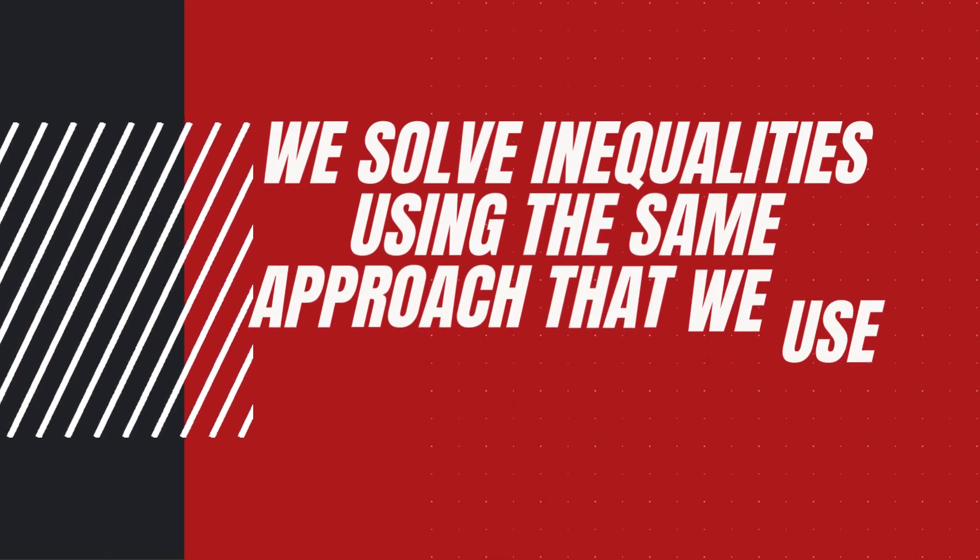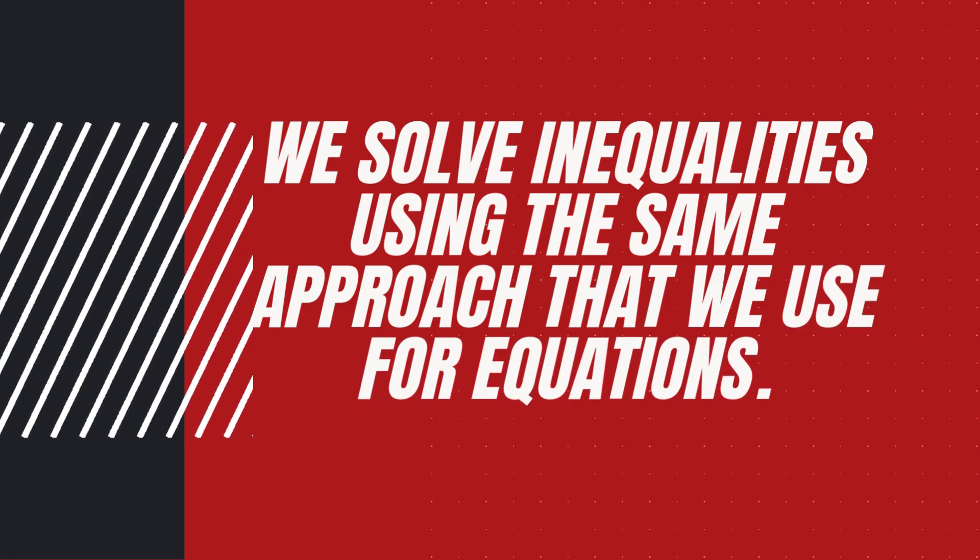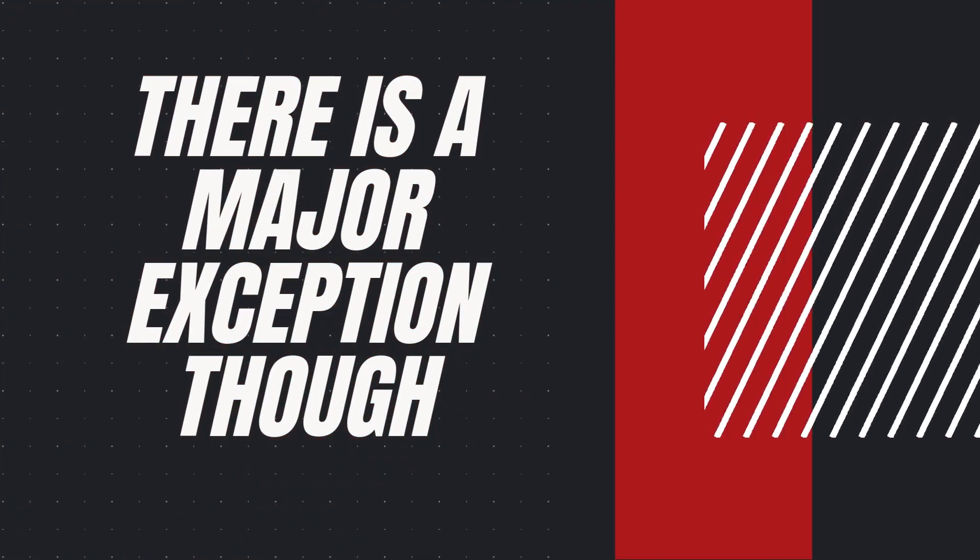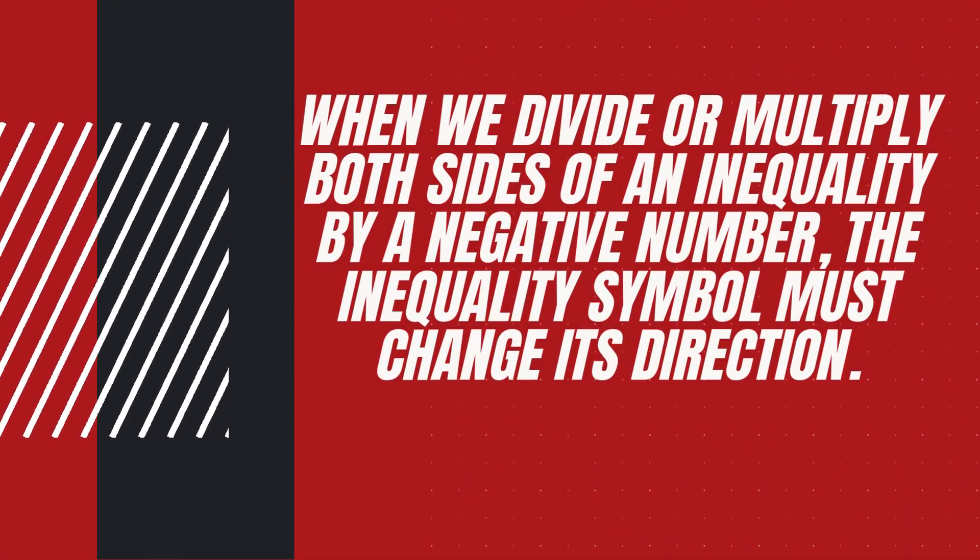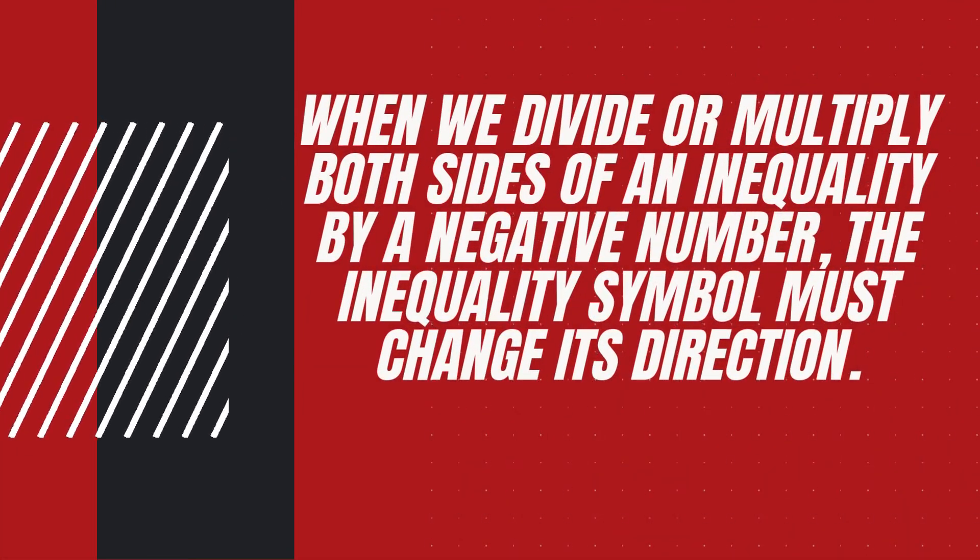We solve inequalities using the same approach that we use to solve equations. There is just one exception. When you divide or multiply both sides of an inequality by a negative number, you must change the direction of the inequality sign.